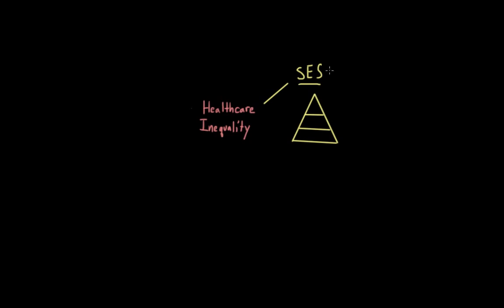I have SES written here, and that stands for socioeconomic status. And if we think about social class, we can think about it in terms of a pyramid, where we have the highest income and educational levels at the top and the lowest at the bottom. And as we go up this social pyramid, we see that access to healthcare gets better, and the quality of that healthcare also improves.